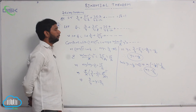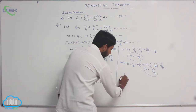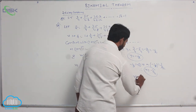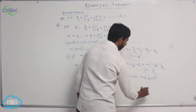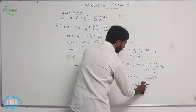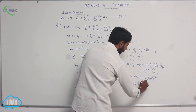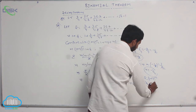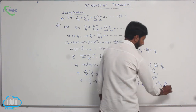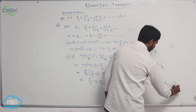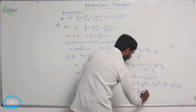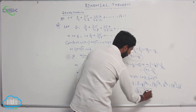Here y = −1/2 and n = −3/2. Substituting n and y in 1 + S = (1 + y)^n: 1 + S = (1 − 1/2)^(−3/2) = (1/2)^(−3/2) = 2^(3/2) = 8^(1/2) = √8. Therefore S = √8 − 1.